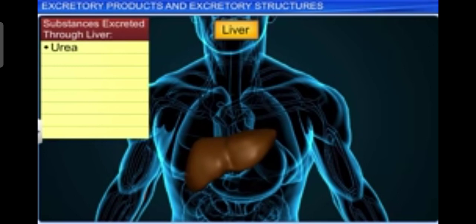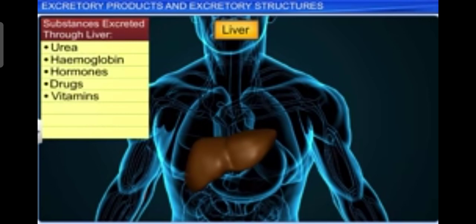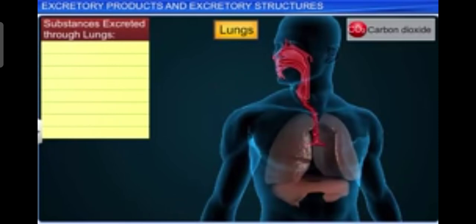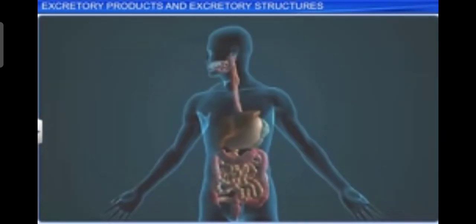The liver, the largest gland in our body, secretes bile containing substances like bilirubin, biliverdin, cholesterol, degraded steroid hormones, vitamins, and drugs. Most of these substances ultimately pass out along with digestive waste. Our lungs remove a large amount of carbon dioxide — approximately 200 ml per minute — and also significant quantities of water every day.